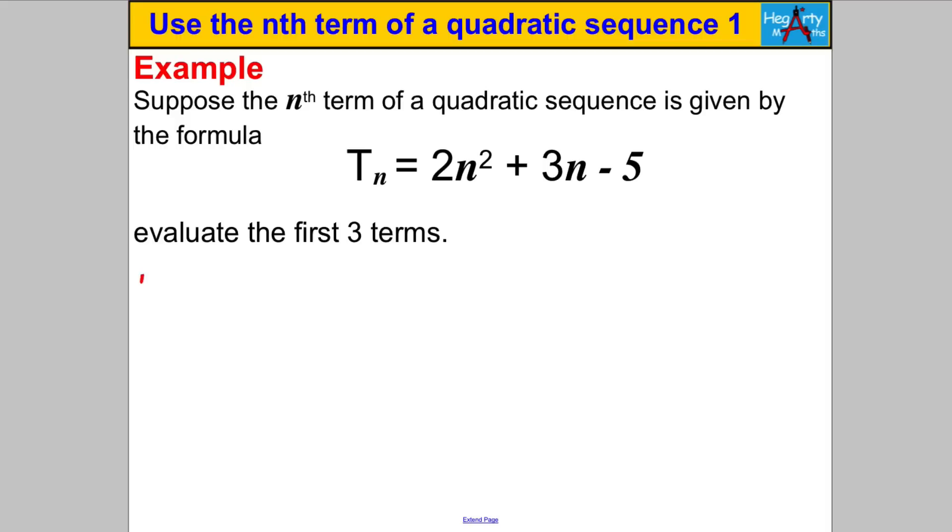Pause the video have a go at this, same old stuff. This time we've got to work out the first three terms so let's make n equal 1 and we're going to work out T_1. So T_1 is equal to 2 times 1 squared add 3 multiplied by 1 take away 5. So 1 squared is 1, 2 multiplied by 1 is 2, 3 multiplied by 1 is 3, so 2 add 3 take away 5, 2 add 3 is 5 take away 5 is 0 the first term is therefore 0.